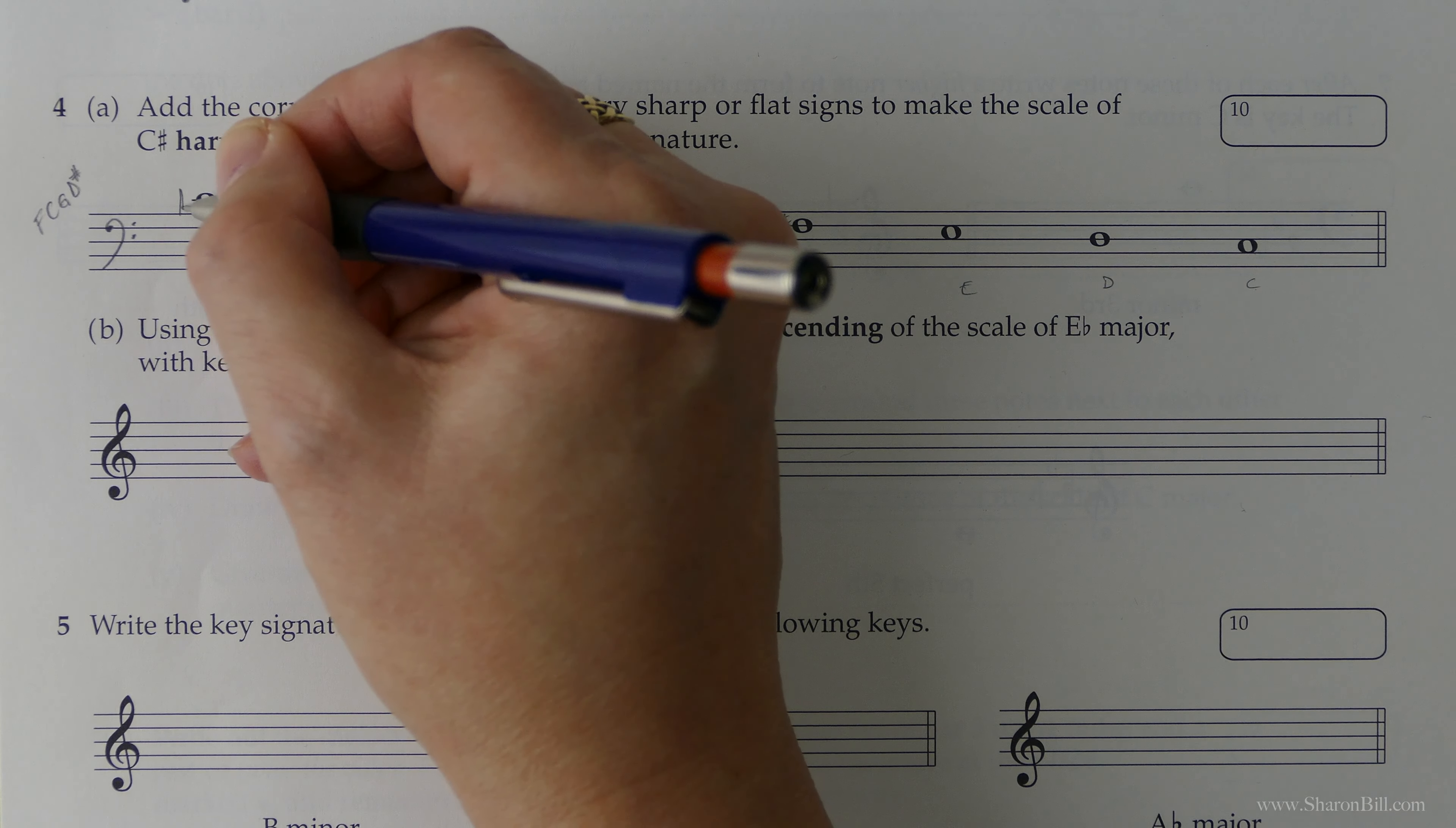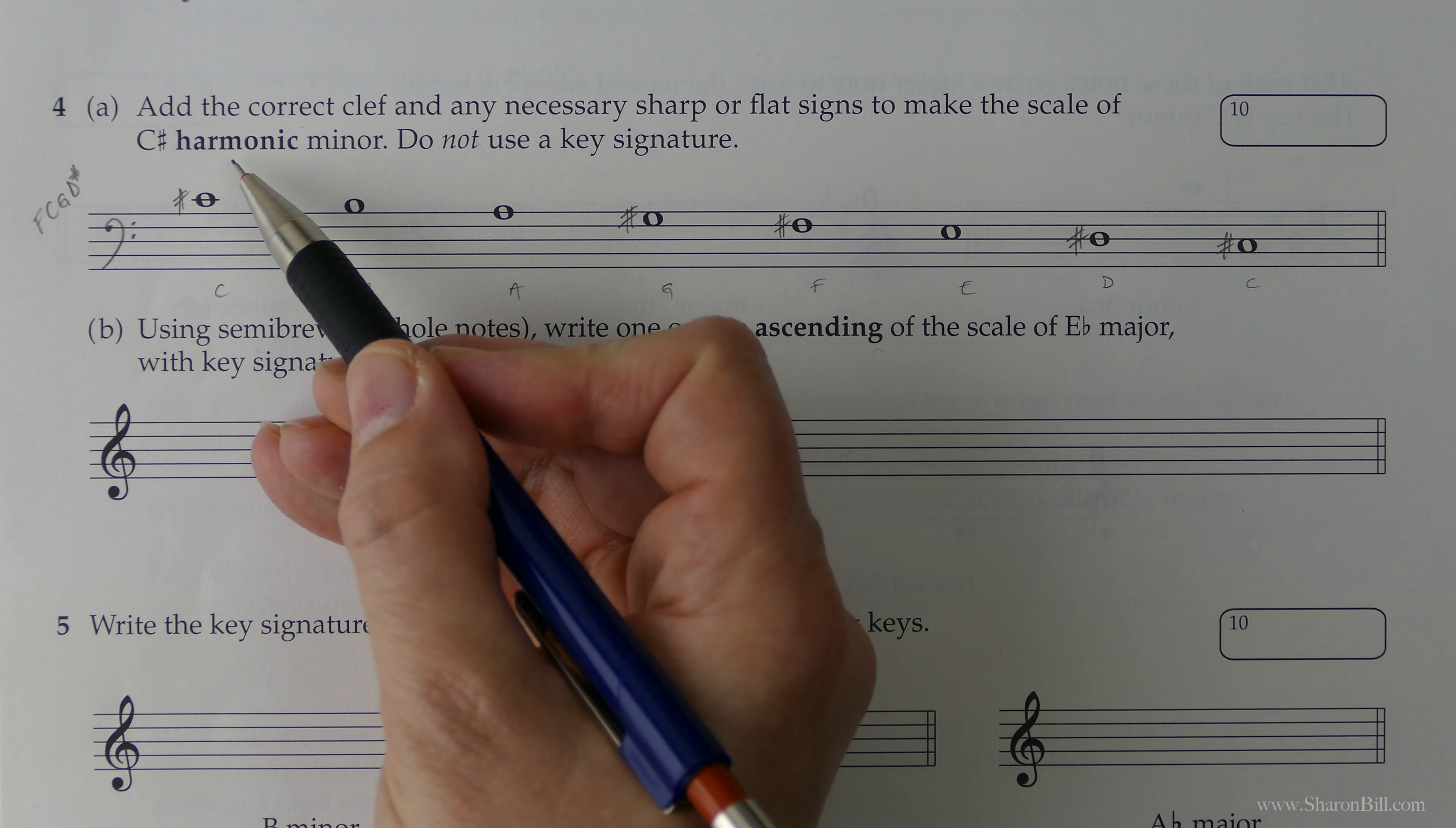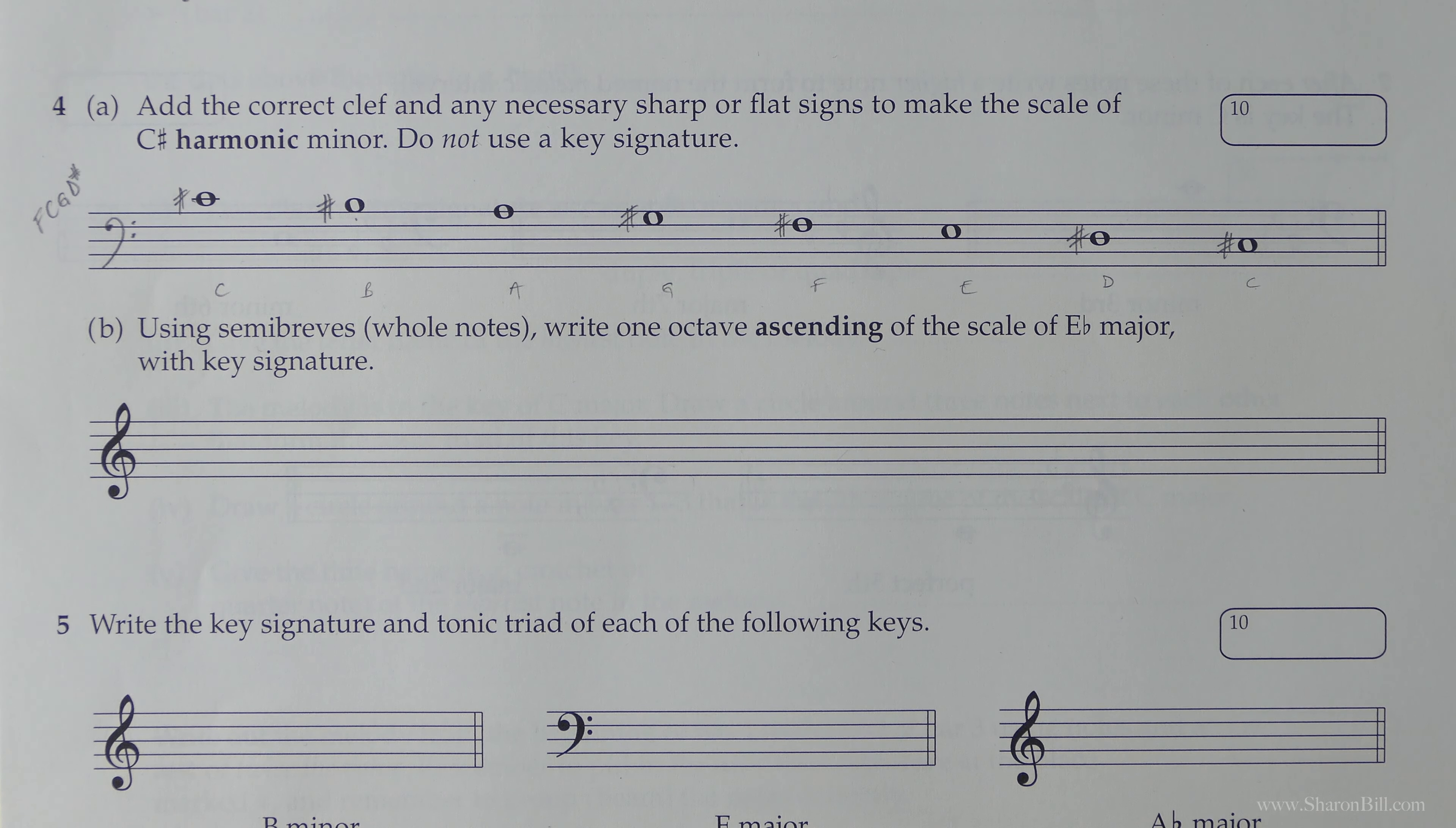C-sharps, we need to do that twice because it begins and ends on C-sharps. G-sharps and D-sharps. So that's our key signature taken care of. Now, to make it harmonic minor, if you remember, the harmonic minor scale has the 7th degree raised. So remember, we're descending. So this is the 8th, this is the 7th, and so the B must become B-sharp to raise that 7th. And that's our harmonic minor scale completed.